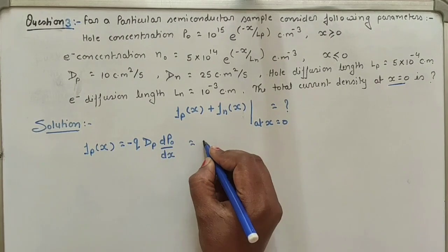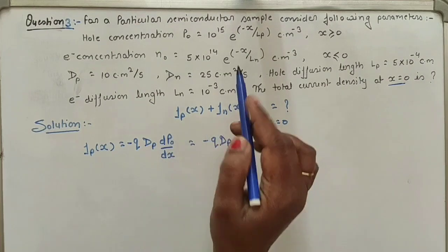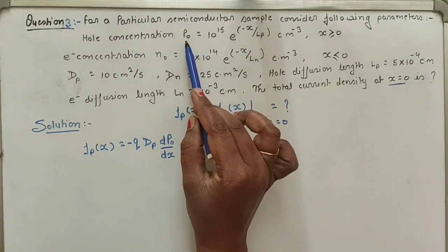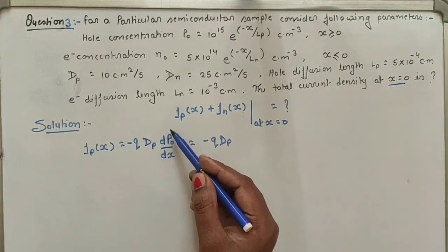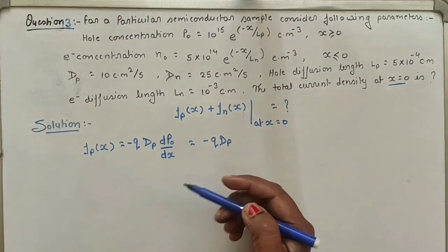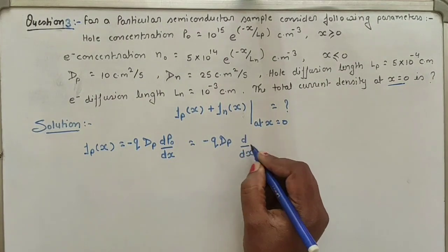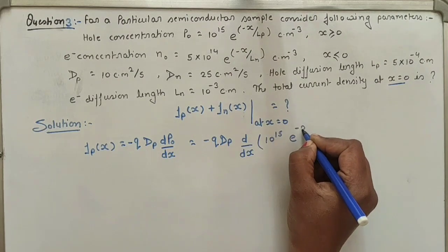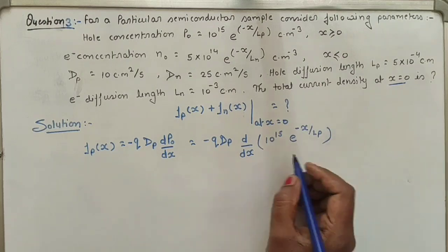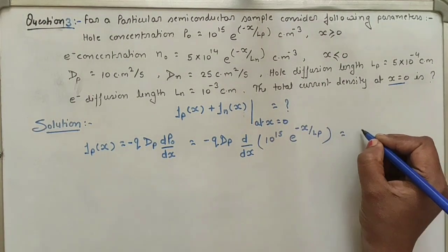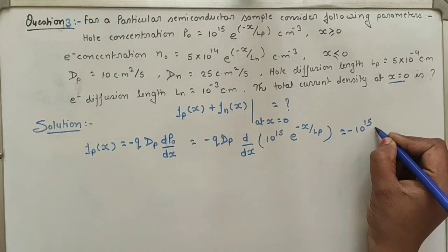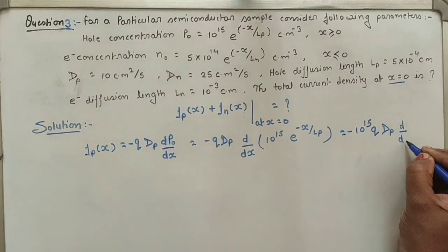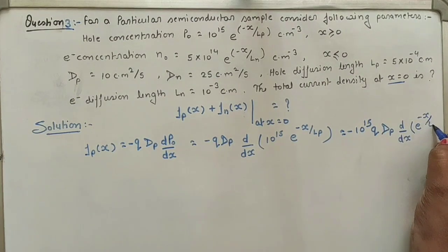Putting in the values: JP(x) = minus q · DP · d/dx [10¹⁵ · e^(−x/Lp)]. Differentiating e^(−x/Lp) with respect to x brings out minus 1/LP. So at x = 0, the minus signs cancel to give a positive result: JP(x=0) = 10¹⁵ · q · DP / LP.